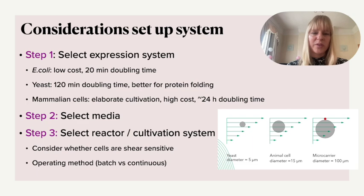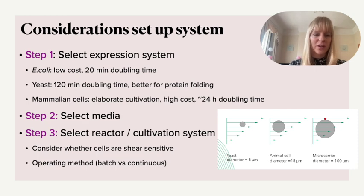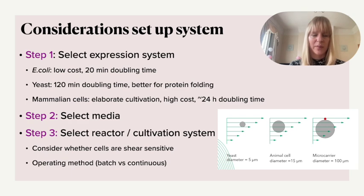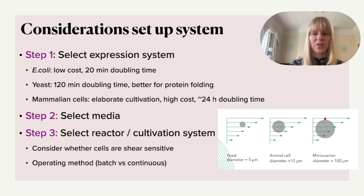The first step is to decide what expression system to use. There are more than the three I'll mention here, but I'll summarize the key ones with their advantages and disadvantages. The gold standard is E. coli because it's low cost and has a very fast doubling time of only 20 minutes, allowing high biomass in a short time. However, since E. coli is a bacterial cell, protein folding differs from mammalian systems, so if protein folding is important, E. coli might not be the right choice.